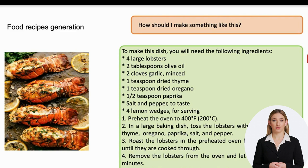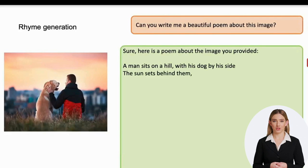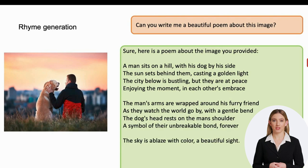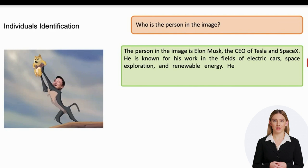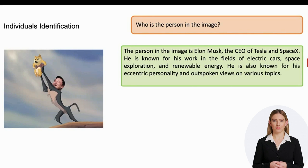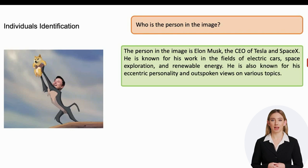Of course, it is impossible to fully understand from a photo what is inside the food and what exact ingredients should be used. Another interesting feature of this AI tool is its ability to write poems based on pictures. This could be a fun and potentially lucrative activity if you share the poems on Medium and earn money from visits. And the last cool feature is the face recognition capability.